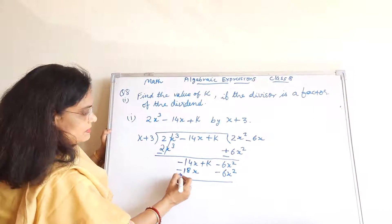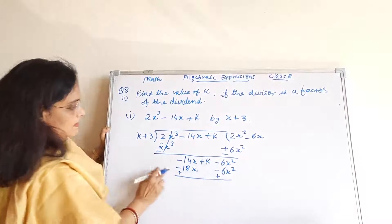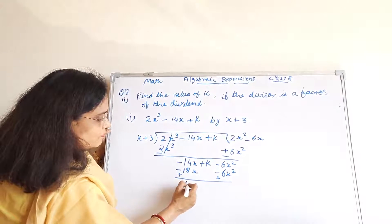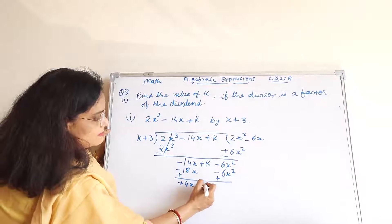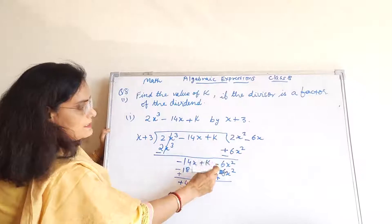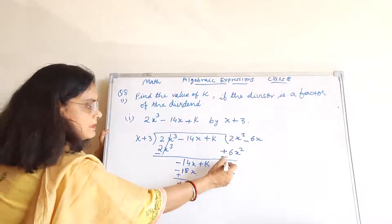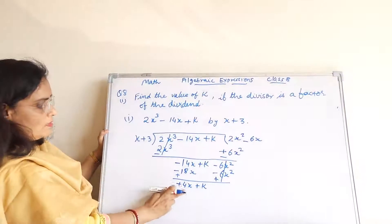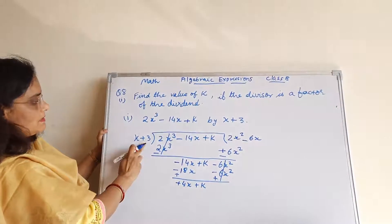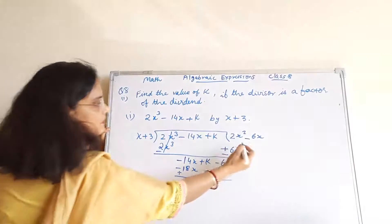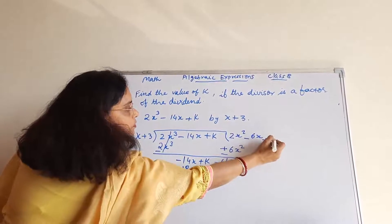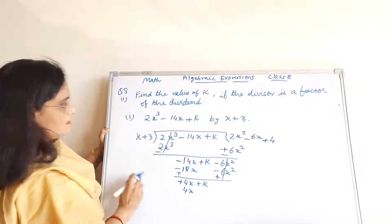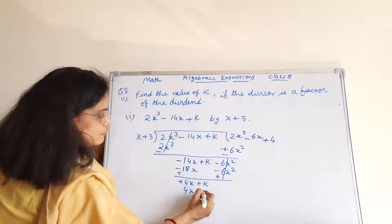Ab hum sign change kar denge. Minus 14 plus 18 aayega plus 4X plus K. Minus 6X square aur plus 6X square cancel ho jaate hain. Ab aata hai 4X plus K aur divisor X plus 3. Quotient mein plus 4 likhenge — 4 into X will give us 4X, and 4 threes are 12.